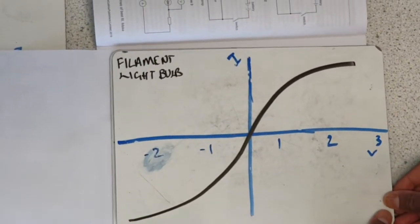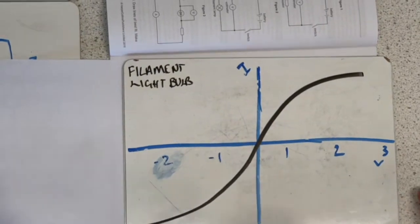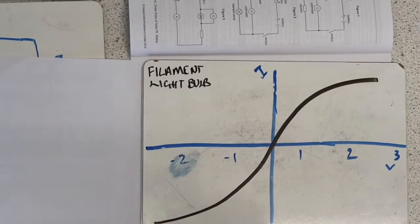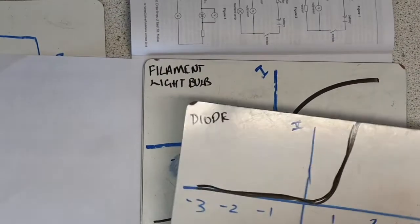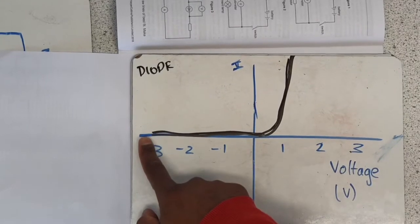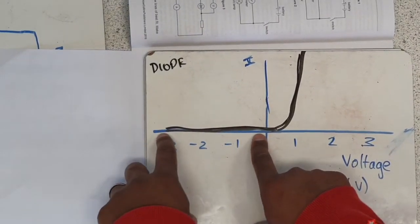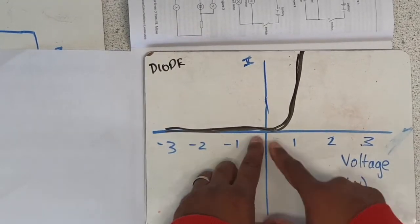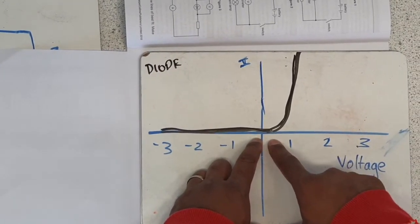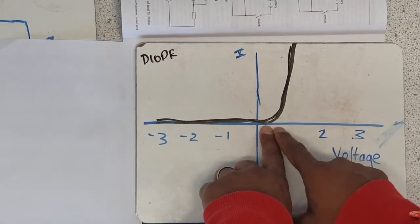This shows you that the filament bulb doesn't follow Ohm's law, because as the resistance is increasing, this is due to the fact that temperature is increasing as well. And then for the diode, you're going to get no current in the negative direction because it has a high resistance that will stop current flowing in the opposite direction. But as soon as you reverse the current, you're going to get current flowing through at a certain voltage, which will shoot sharply up.